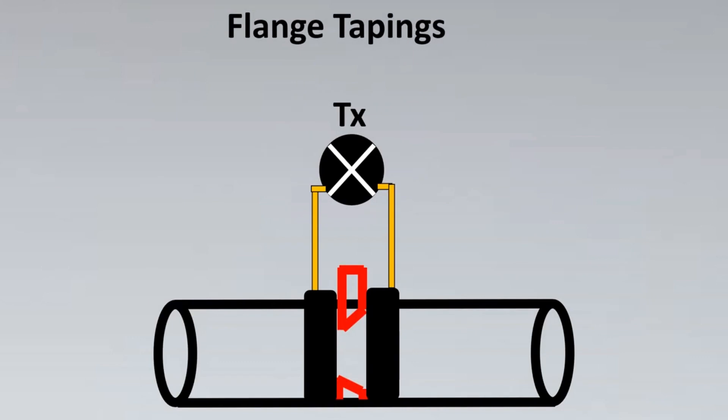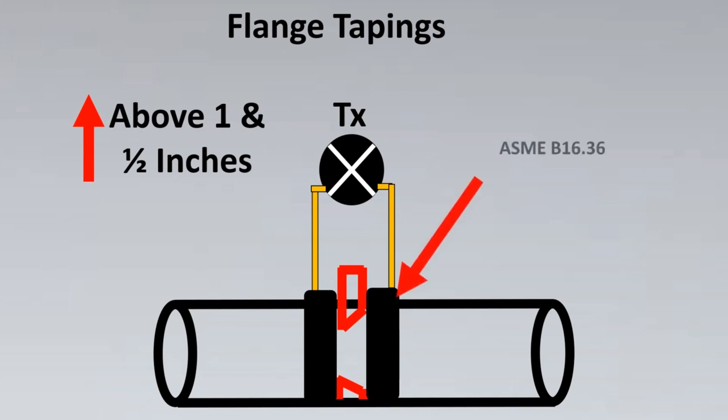Now let us look into the next case which is flange tappings. For flange tappings, usually we go for line sizes which are above 1.5 inches. Here this standard for using these flanges is ASME 16.36.